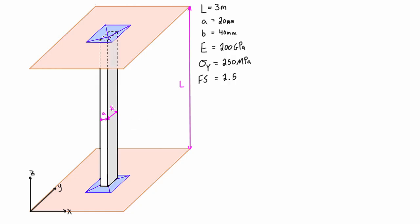We're treating this as pinned joints — pin on each end — so we treat these as ball-and-socket joints. Because this rectangular cross-section has two distinct ways it can buckle, it can buckle in the YZ plane, so left to right or right to left, or it can also buckle in the XZ plane, going into or out of the page.